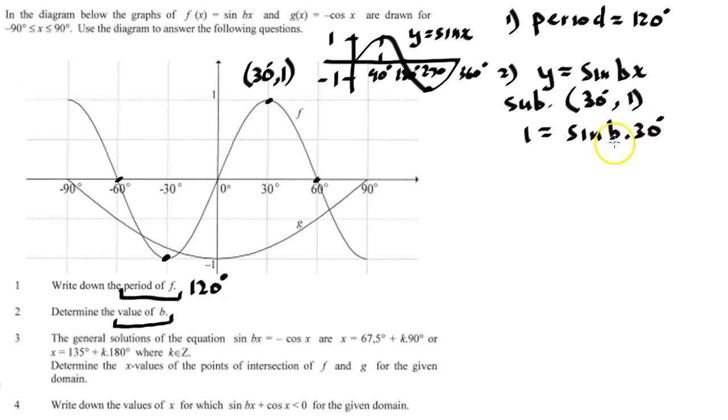It will be 1 = sin(b × 30°). What must I now put in place of b such that my equation would balance out, which means my left hand side will equal to the right hand side. And that is clearly b must equal to 3. Reason being sin of 90 is equal to 1. Therefore, b is equal to 3.